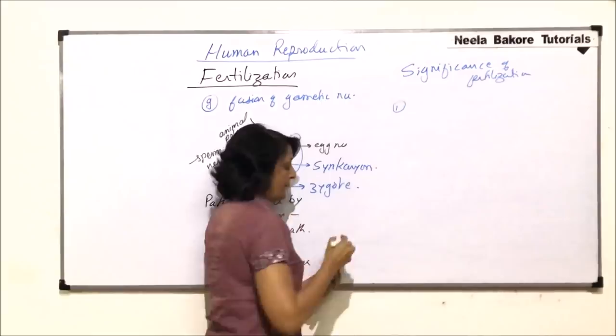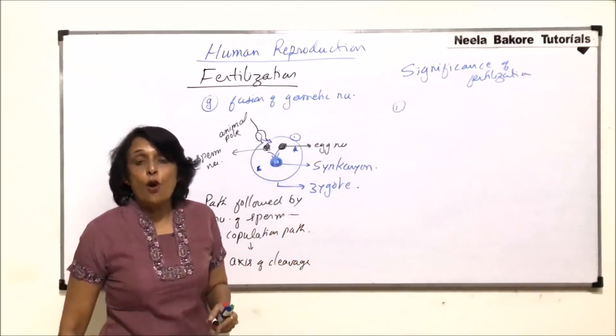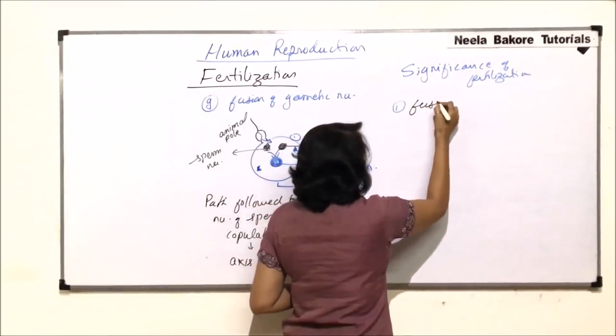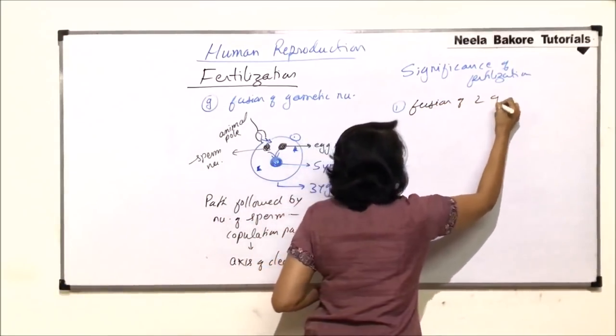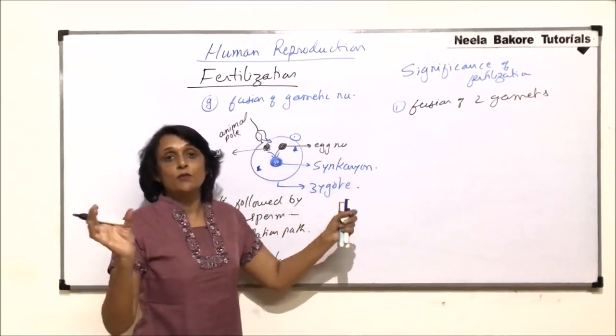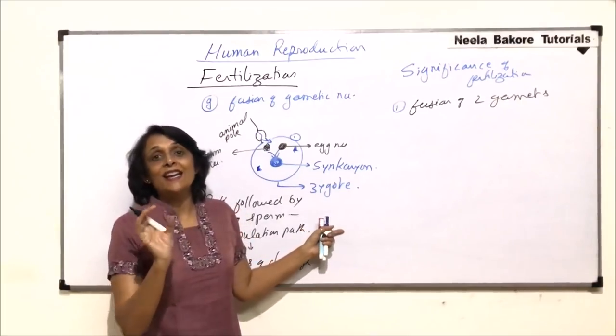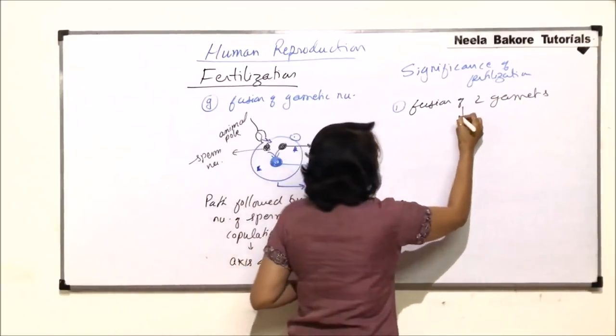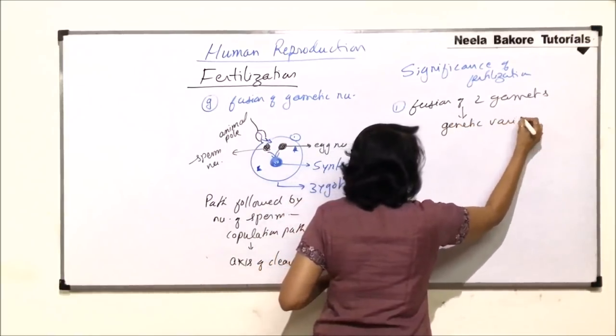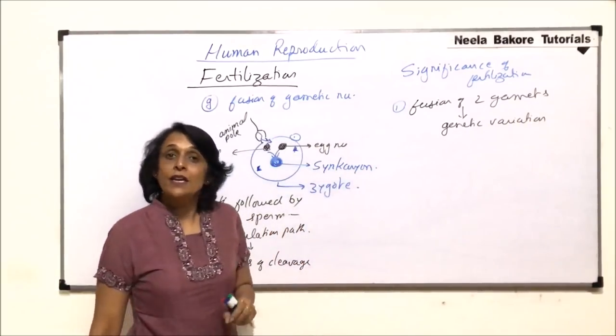Significance of fertilization. First thing, it results in the fusion of two gametes. Fusion of two gametes, and because these gametes are coming from two different individuals, there would be genetic variation. So this results in genetic variations and we know that variations are very essential for evolution.